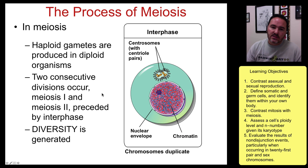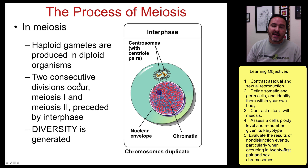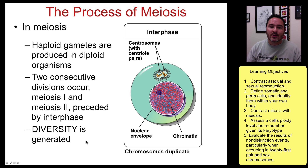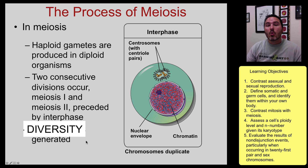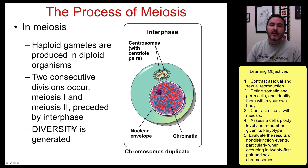So in meiosis, what we're trying to create are haploid gametes. It takes two consecutive divisions — meiosis I and meiosis II. And the point of meiosis is to create diversity, where the point of mitosis was to create identical daughter cells. Here, we're trying to create non-identical haploid gametic cells.